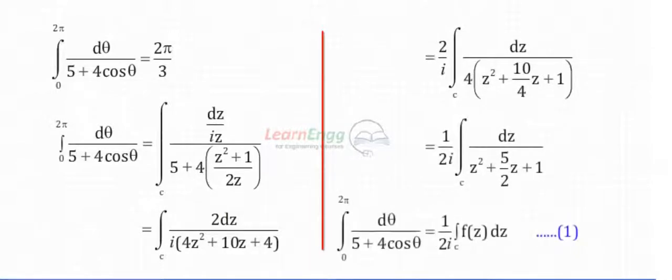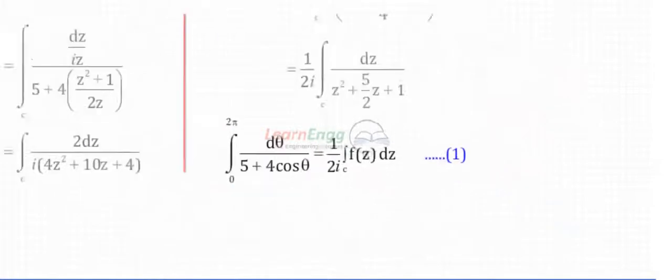The integral from 0 to 2π of dθ divided by (5 + 4cosθ) is equal to 1/(2i) times the closed contour integral of f(z) dz, where f(z) is the corresponding function in z.